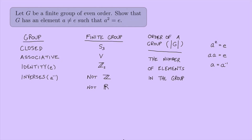We need to prove that for a group of even order, such an element exists. When you're not sure how to prove something like this, it helps to look at a few examples — take some familiar groups and see if you can figure out what's going on for those specific cases.